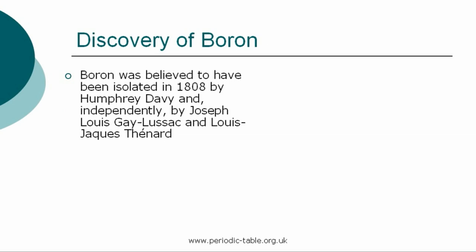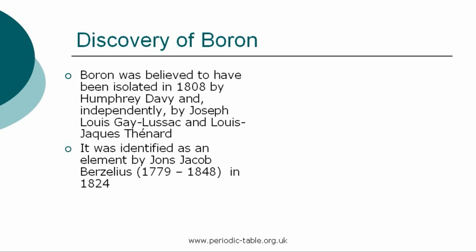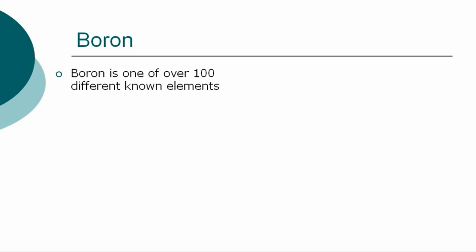Boron was believed to have been isolated in 1808 by Sir Humphrey Davy in London, and independently by the French chemist Joseph-Louis Gay-Lussac and Louise-Jacques Thinard in Paris. It later emerged that in both cases the element was actually a compound. It was later identified as an element by Jöns Jacob Berzelius (1779–1848) in 1824. Pure boron was produced by the American chemist Ezekiel Weintraub in 1909.